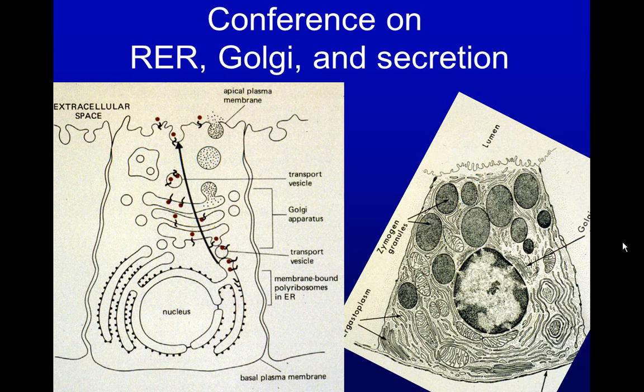Conference on Roughing the Pleasant Reticulum, Goji, and Secretion. Here we see the pathway that proteins follow from the Rough Endoplasmic Reticulum, Goji apparatus, and then through the cell surface. On the right side, we see zymogen granules in a secretory cell that will be discharged in the lumen.